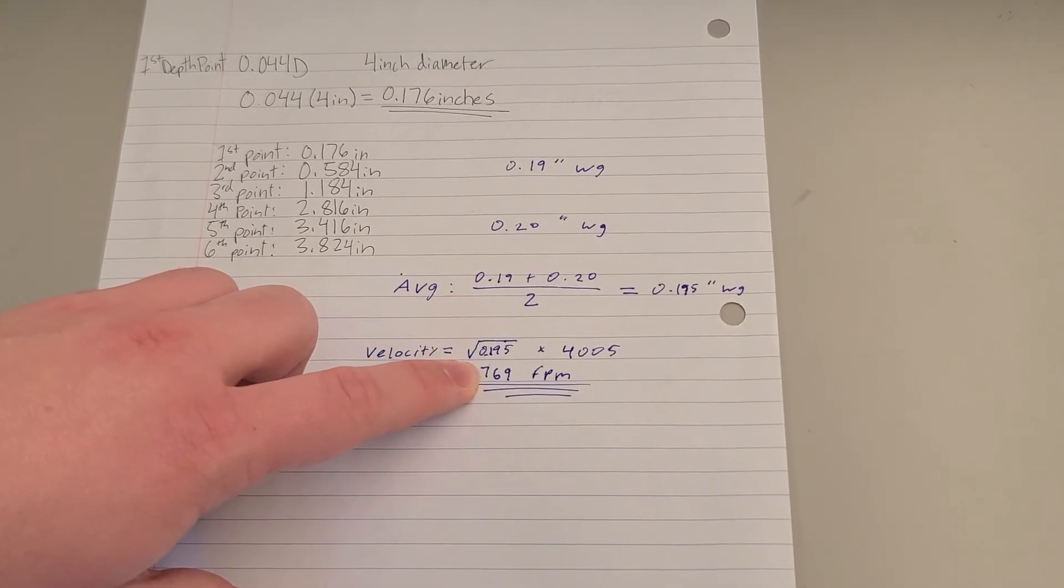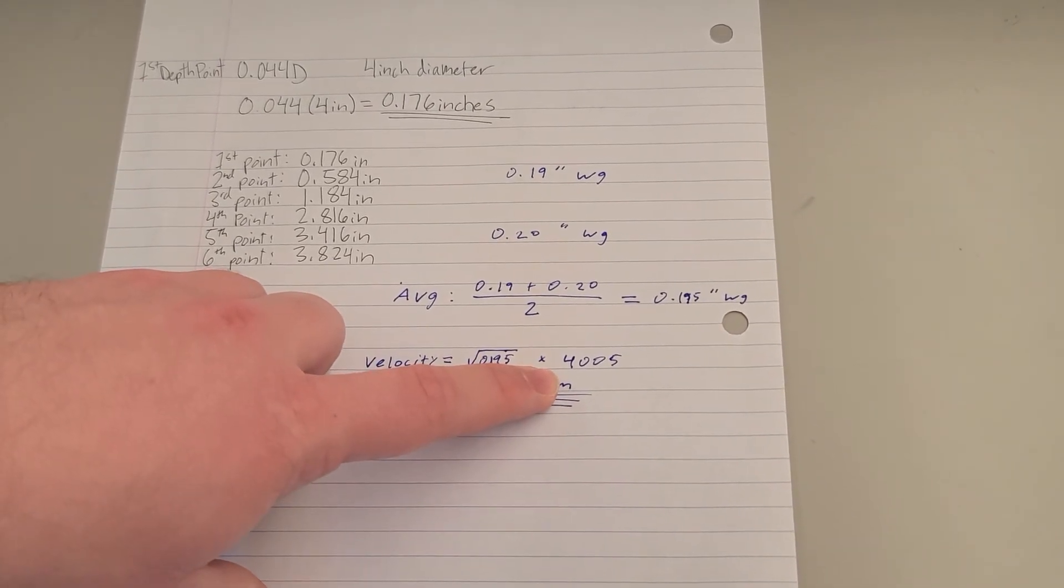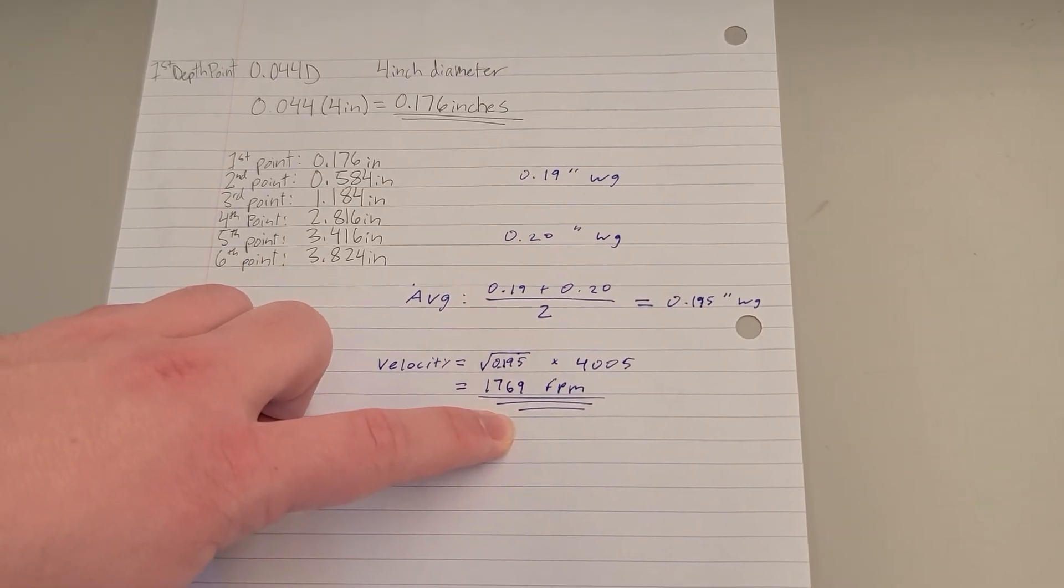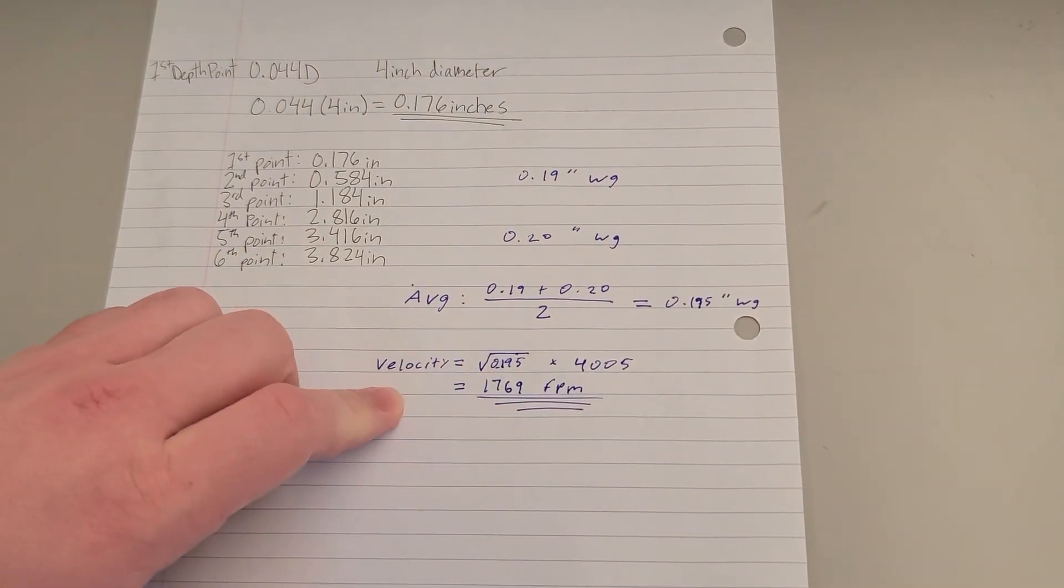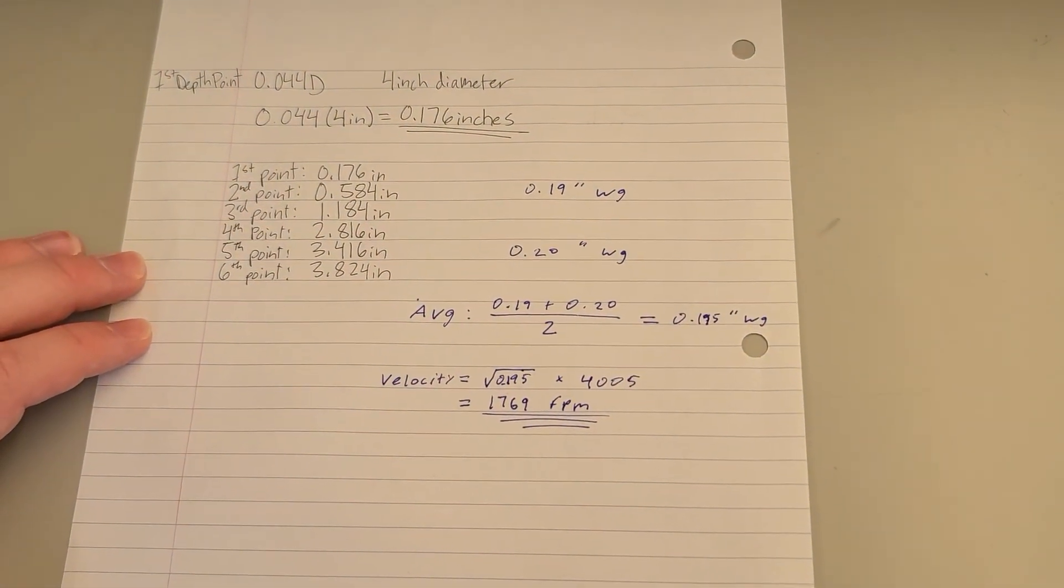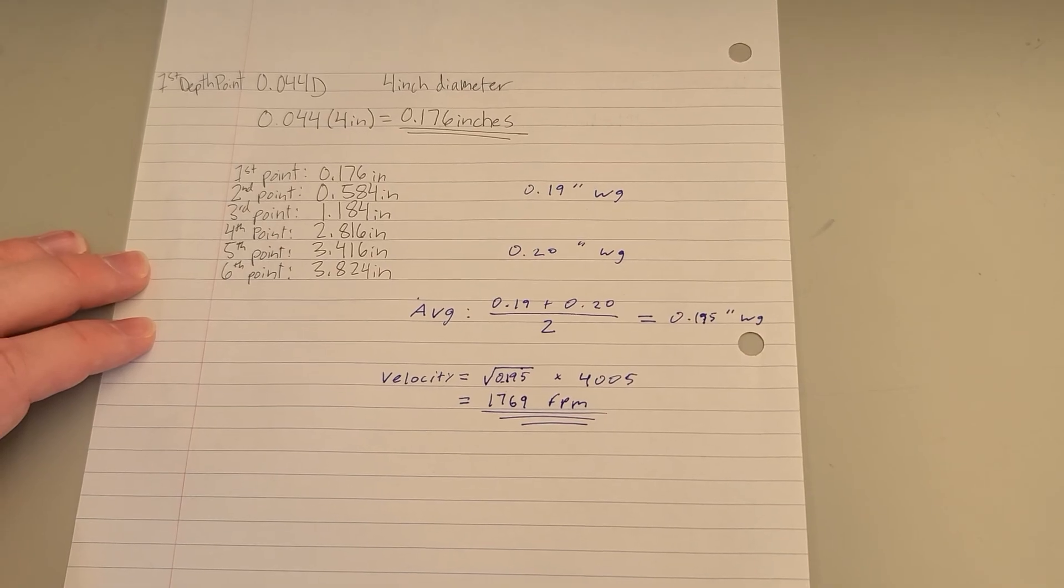Then we found the velocity of the air by taking the square root of the velocity pressure, multiplying it by 4005, giving us a final answer of 1,769 feet per minute. Also, remember that you must adjust these results for your local air density and temperature.